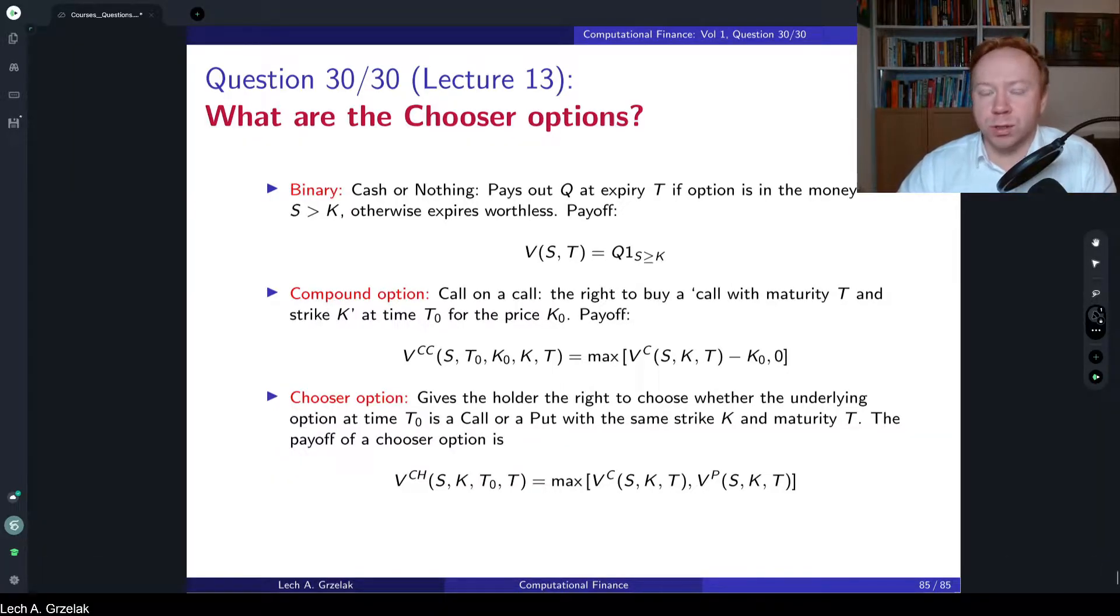Hello everyone, welcome to questions and answers based on the course of Computational Finance. Today we have the final question of this series, question number 30, which is based on materials discussed in lecture number 13. Lecture 13 was focused on pricing of exotic derivatives using numerical techniques. The question of today is: what are the chooser options?